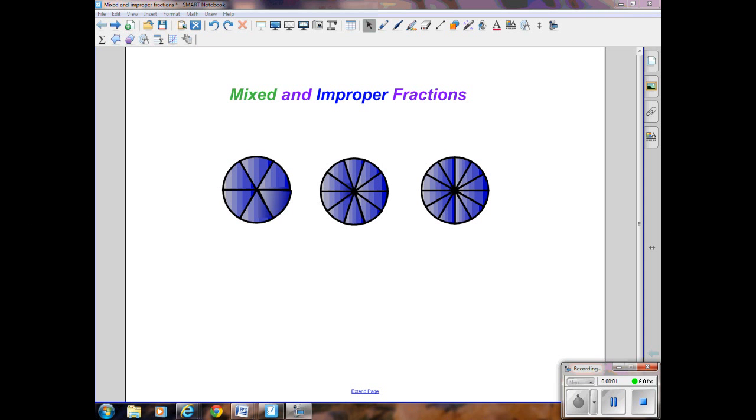Okay, we're going to talk about mixed and improper fractions. By way of review, when we have one whole and we divide it into five equal parts, one, two, three, four, five, we say we have five-fifths. Additionally, if we have another whole circle and we have one, two, three, four, five, six, seven, eight, nine, ten parts, we have ten equal parts, and if we're expressing all ten of them, we have ten-tenths.